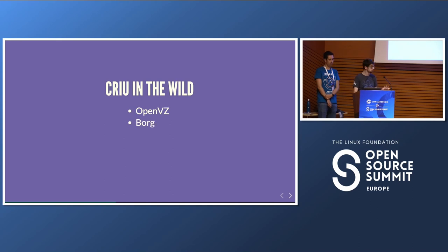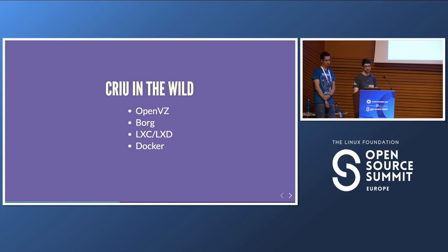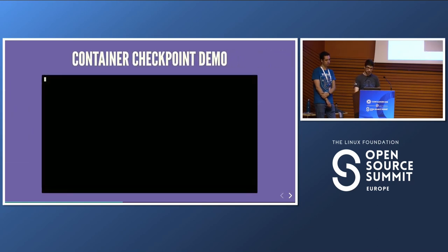In the wild, CRIU is used by OpenVZ, Virtuozzo's platform, by Borg — Google's internal container orchestrator — and by Linux containers (LXC/LXD) for live migration. In recent years it has also been used in Docker, which added checkpoint and restore functionality, and lately in Podman with work by Adrian Reber.